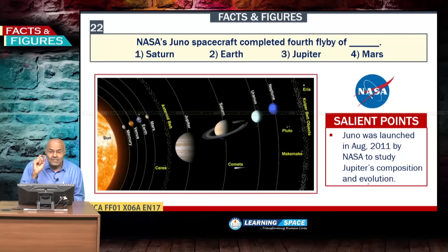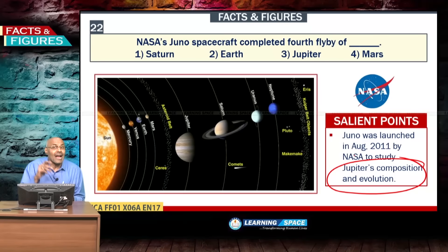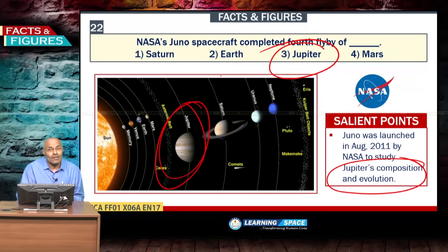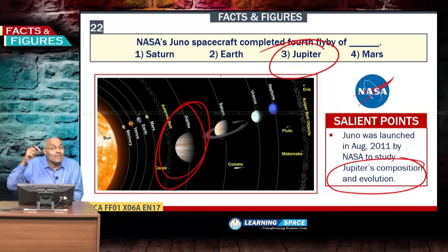NASA's Juno spacecraft, launched in 2011, is basically to study Jupiter's composition and evolution. It recently completed its fourth flyby — meaning coming nearer to the planet — and will continue further exploration.